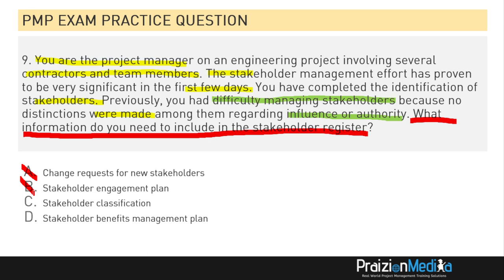Option C: stakeholder classification — that sounds good, so we'll keep that. Option D: stakeholder benefits management plan — that is not in your stakeholder register; it's a totally different document. Through the process of elimination, you are able to select the right answer. It's stakeholder classification. The answer is C.